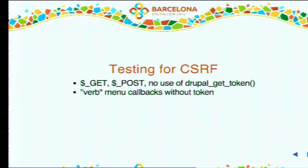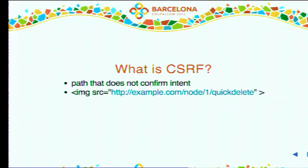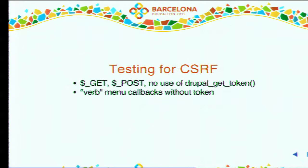How can we test for CSRF? If you look at the code and see people using $_GET or $_POST variables without the Form API, that's a strong indication of a CSRF vulnerability. They're not using drupal_get_token to verify that links actually have the intent of the user. You can look out for verbs in menu callbacks like 'delete' — delete always means an action, and if that is not CSRF-protected, people can change things in your database. Nodes get deleted or something gets changed which might not be intentional.